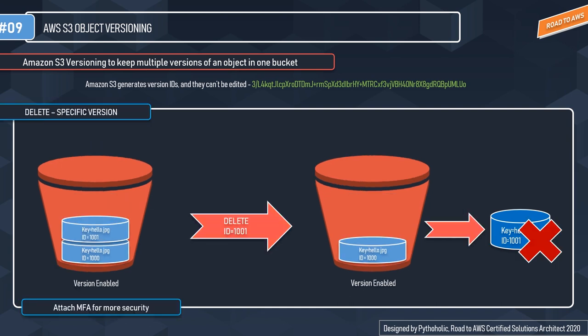Can we delete an object completely? Yes, you can. When you send a delete request with a specific version ID, S3 will not create any delete markers. You can do this only if you are the owner of the bucket. Specifying the ID in the delete request will permanently delete that particular version from the bucket — that version ID will no longer be available. For example, if we have versions 1001 and 1000 and send a delete request with ID 1001, that version is completely removed from the bucket.